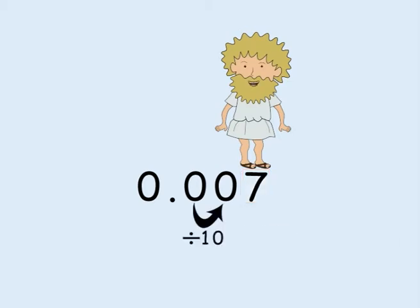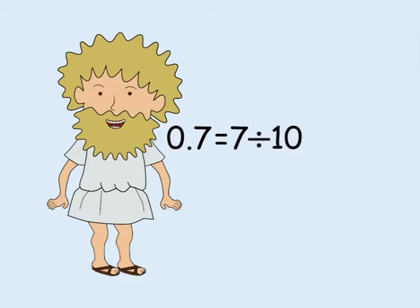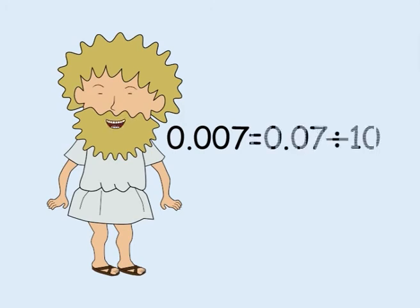Each time you move a place to the right, the size decreases by a factor or power of ten. So if you have a number and move it one place to the right, this means it gets ten times smaller. So 0.7 is ten times smaller than seven. 0.07 is ten times smaller than 0.7. And 0.007 is ten times smaller than 0.07.